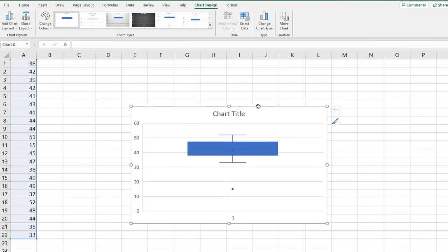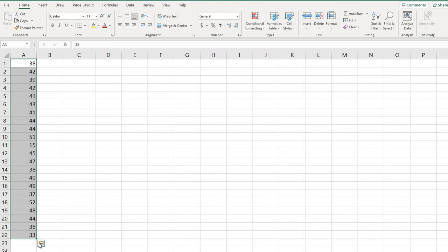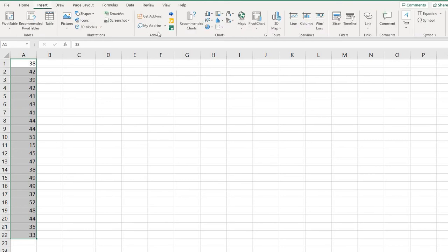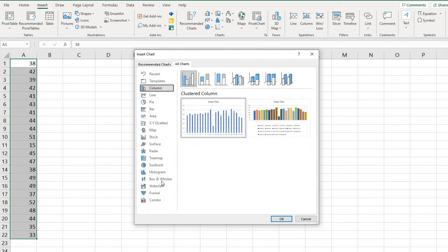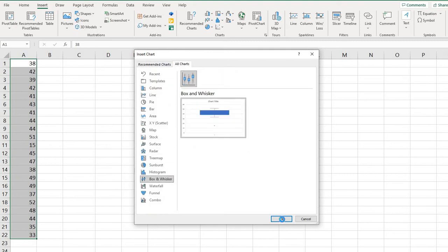But some of you don't have that handy dandy little quick analysis tool, so not to worry. You can still create it by going to insert and come over to your charts in the center, and you can't see the box and whisker here. So you would just hit this little down arrow where it says see all charts and you would go to all charts and then you would go to the box and whisker.